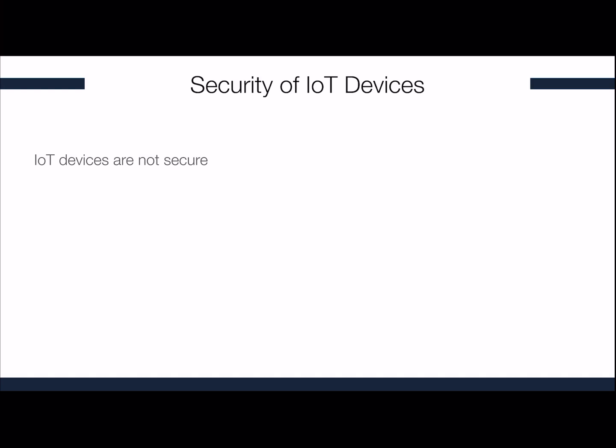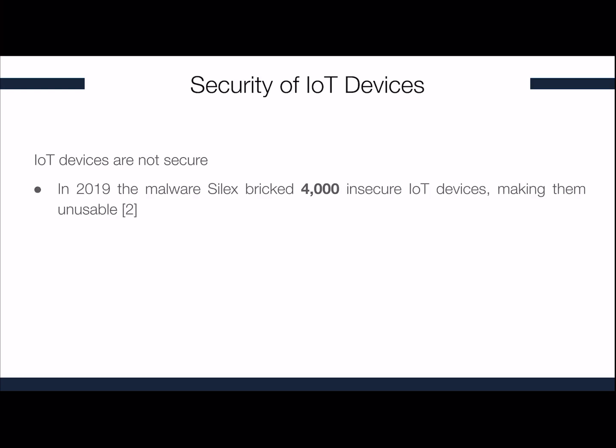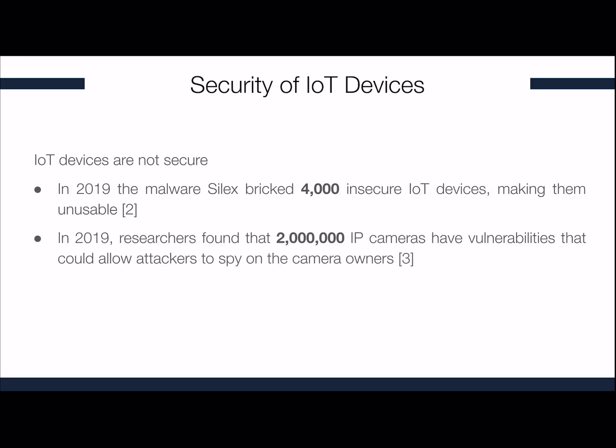Unfortunately IoT devices are not secure. For instance, in 2019 the malware Silex bricked 4000 insecure IoT devices making them unusable, and also in 2019 researchers found that 2 million IP cameras have vulnerabilities that could allow attackers to spy on the camera owners.